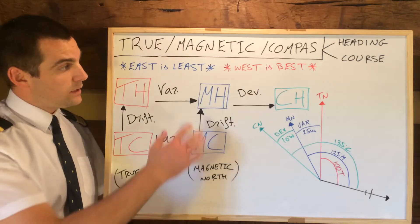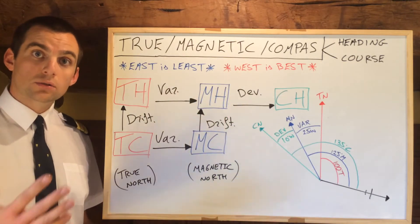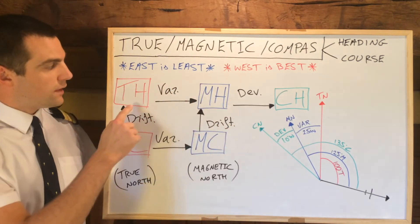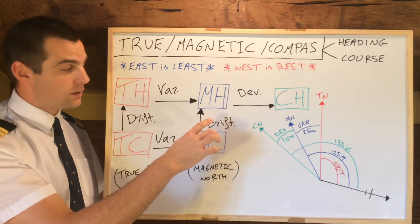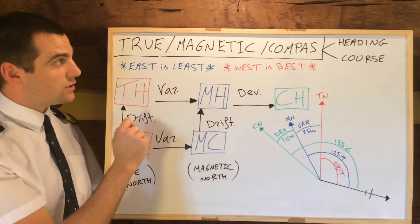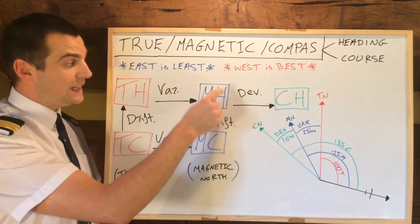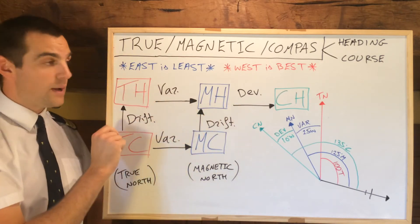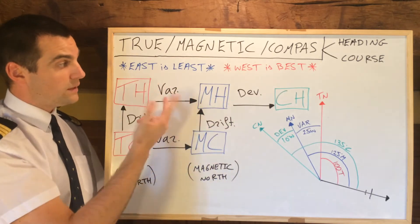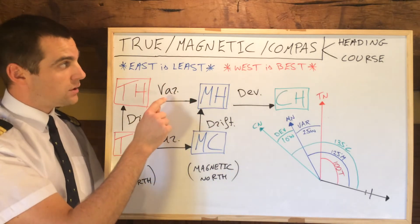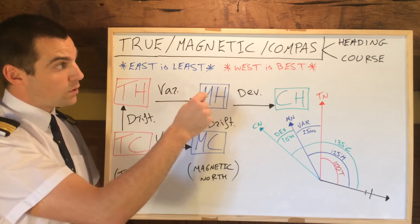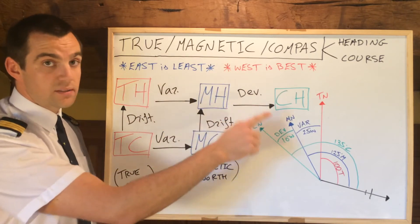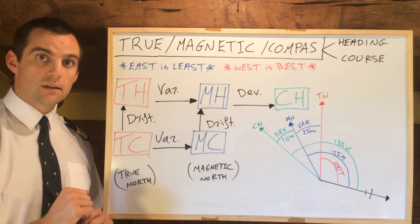Deviation is not something you will ever have to calculate. Deviations will be given to you in east or west, plus or minus. Remember, the east is least, west is best formula only works following the arrows. So if going from true heading to magnetic heading with an easterly variation, east is least — magnetic heading would be less. If given a magnetic heading and asked to calculate your true heading, the rule is inversed. With a westerly variation going from magnetic to true, that one would be less. Be very careful with east is least, west is best — it only works in the direction of the arrows; going the other way, it's the opposite.